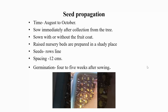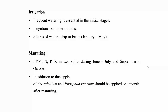Clove can also be propagated vegetatively by grafting on its own stalk. Clove can conventionally be grown mixed with other commercial crops like areca nut, coconut, nutmeg, etc. The shade cast by these crops provides enough protection to clove from the sun.